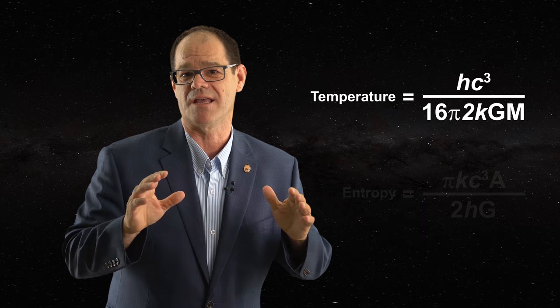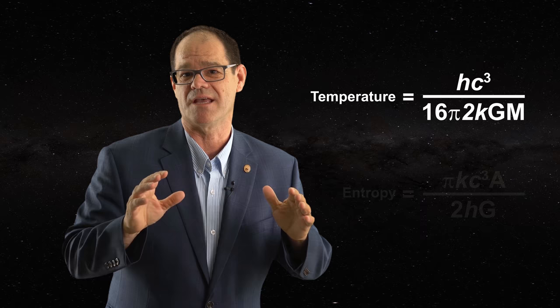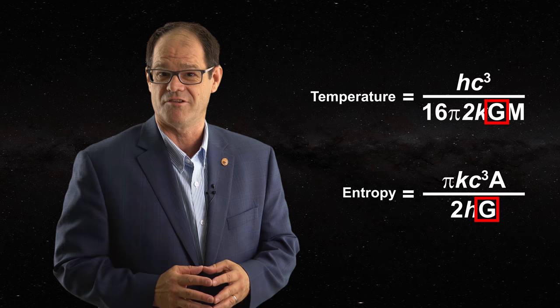Another idea in black hole thermodynamics is that the entropy of a black hole is equal to several constants times the area of the event horizon. What's the problem with these equations? The presence of the universal constant of gravitation, G. Nowhere in thermodynamics does this constant play any role.